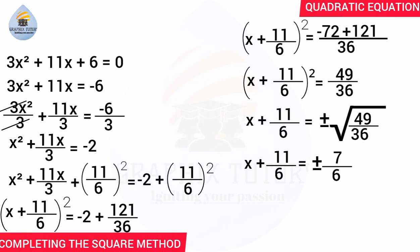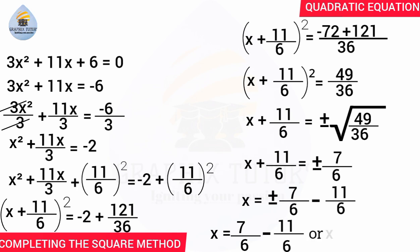From here, I take the constant to the other side by collecting like terms. So x equals plus or minus 7 over 6 minus 11 over 6. We now consider both cases: for the positive case, x equals positive 7 over 6 minus 11 over 6; for the negative case, x equals negative 7 over 6 minus 11 over 6.